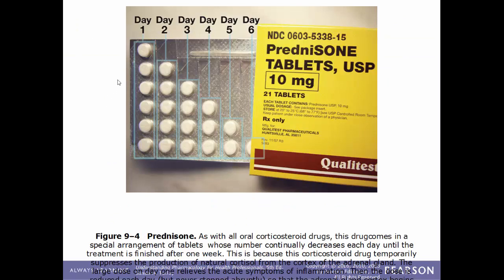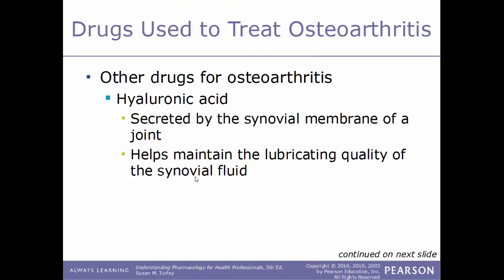This image shows an example of prednisone packaging. It is important to follow directions carefully because there is a tapering-off schedule for the amount of pills taken: day one has six pills, day two has five, day three has four, and so on. The directions must be followed exactly as prescribed in order to be fully effective.